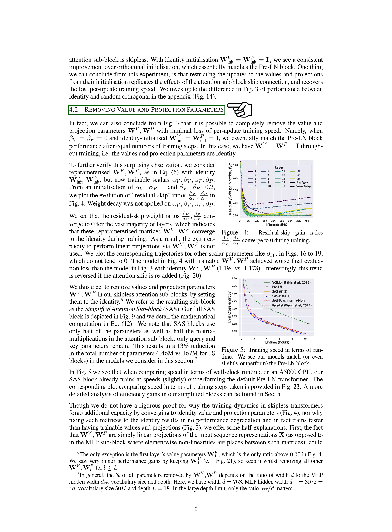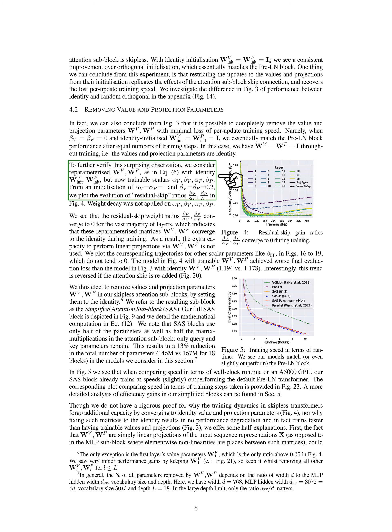We've discovered that it's possible to entirely eliminate the value and projection parameters, W-hat-V and W-hat-P, without significantly slowing down the training process. This is achieved when both beta_V and beta_P are set to zero and the initial values of W-hat-V and W-hat-P are set to the identity matrix I. The performance of the pre-LN block is matched after the same number of training steps, meaning that throughout training, the value and projection parameters remain as the identity matrix.